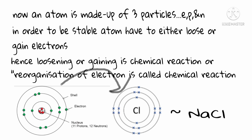Atom is made up of three particles: electron, proton and neutron. In order to be stable atom have to either lose or gain electrons. Hence, loosening or gaining of electrons is defined as a chemical reaction.